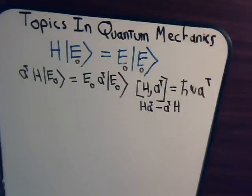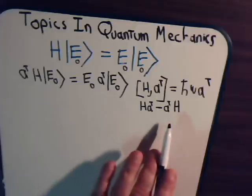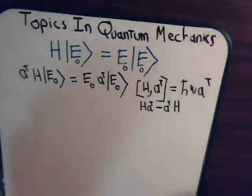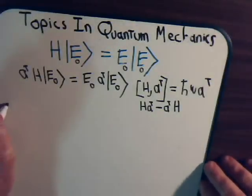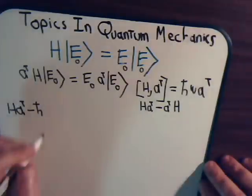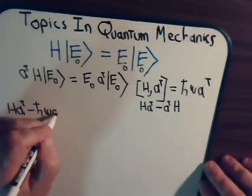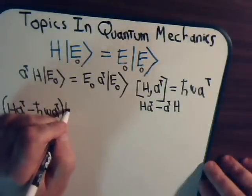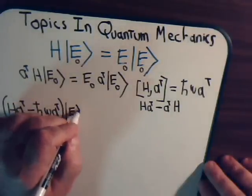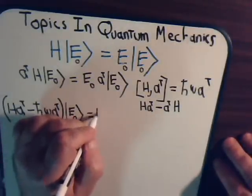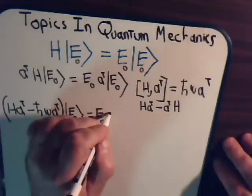So here we can say that A†H equals H A† minus this commutator term. So we have H A† minus ℏω A† times the eigenstate, and the right-hand side does not change.